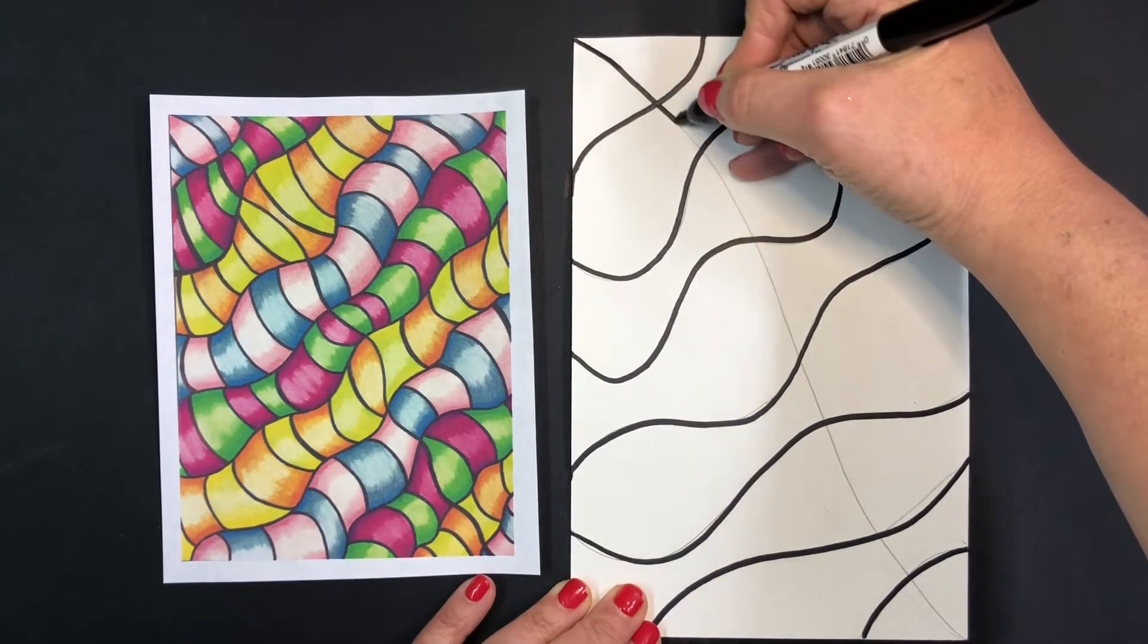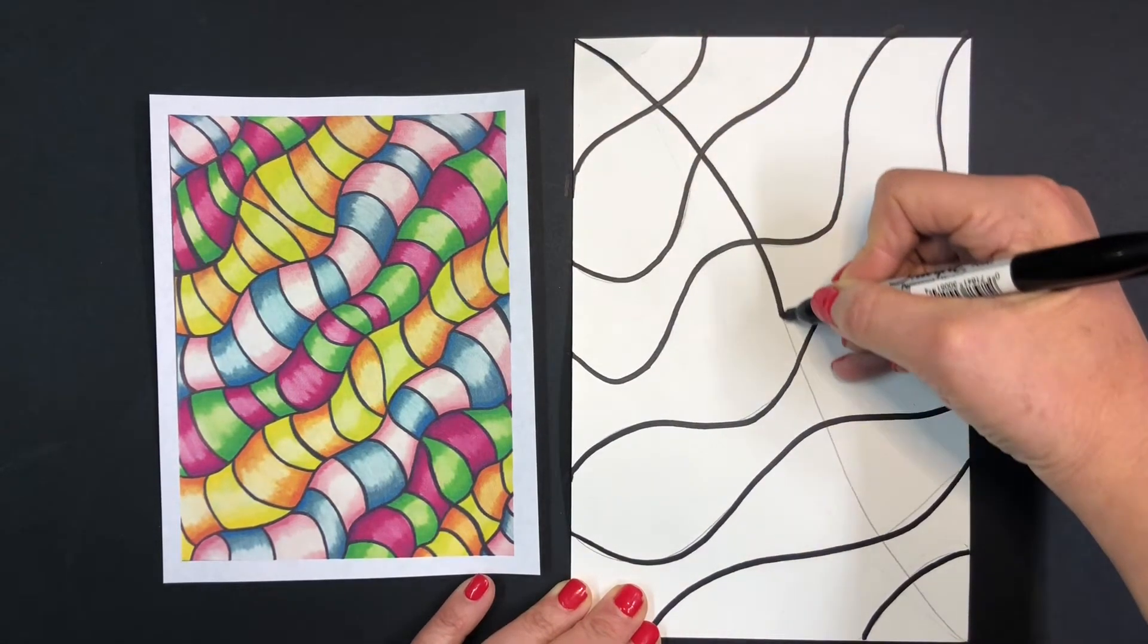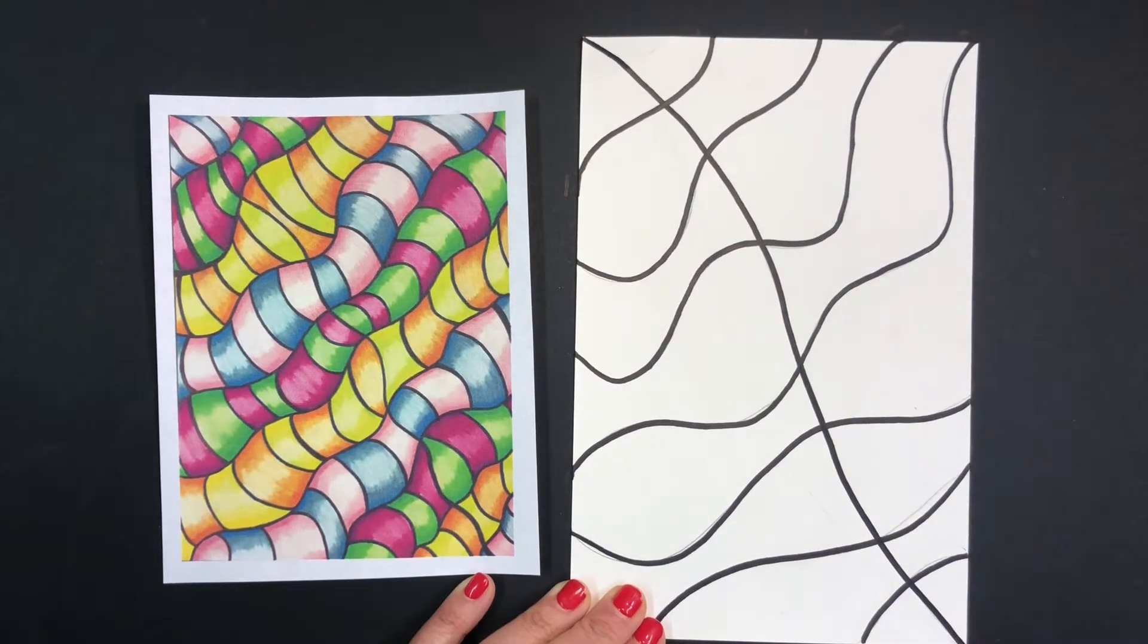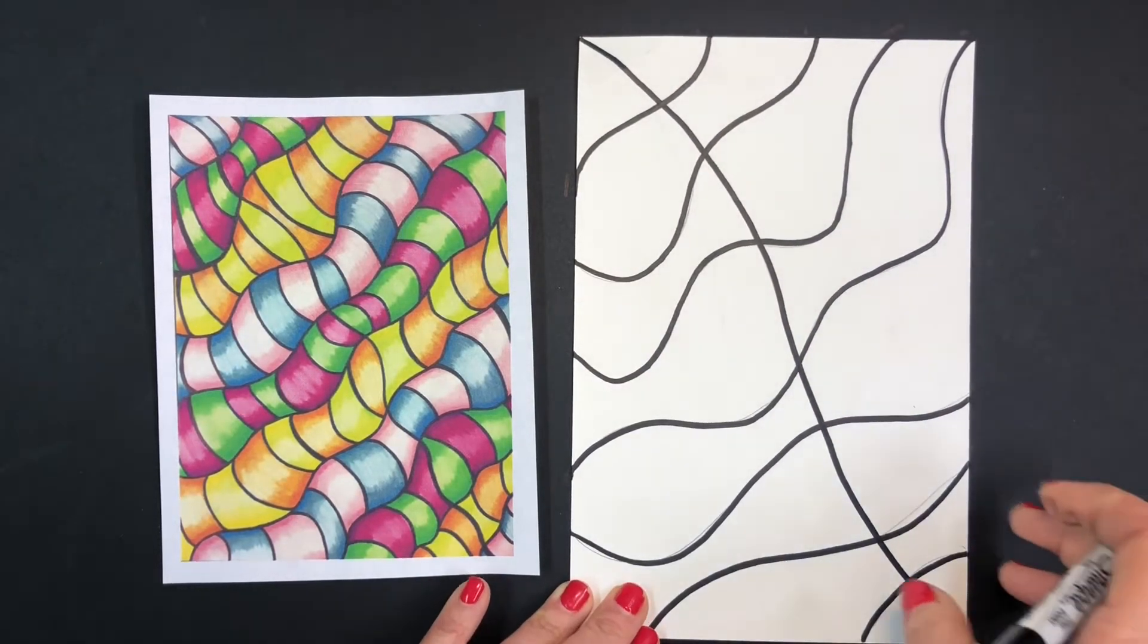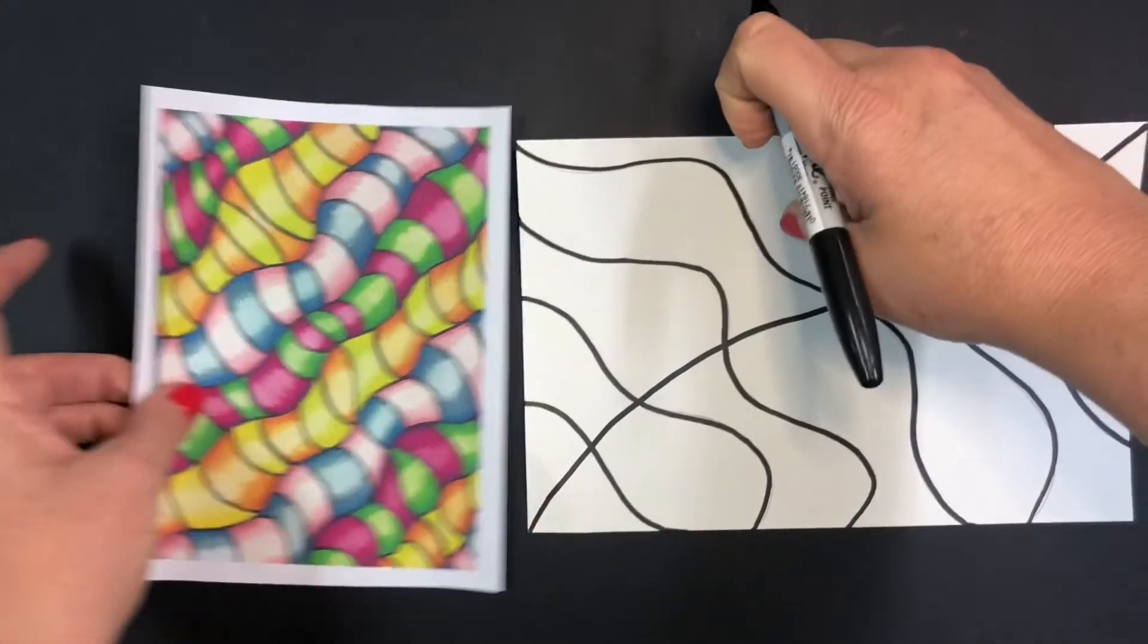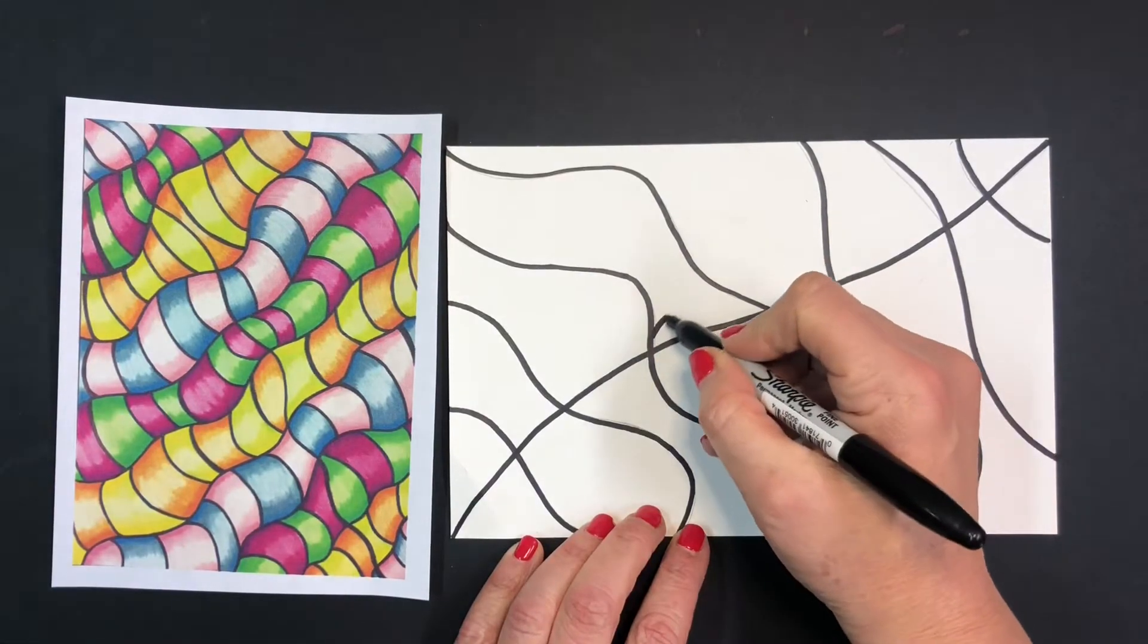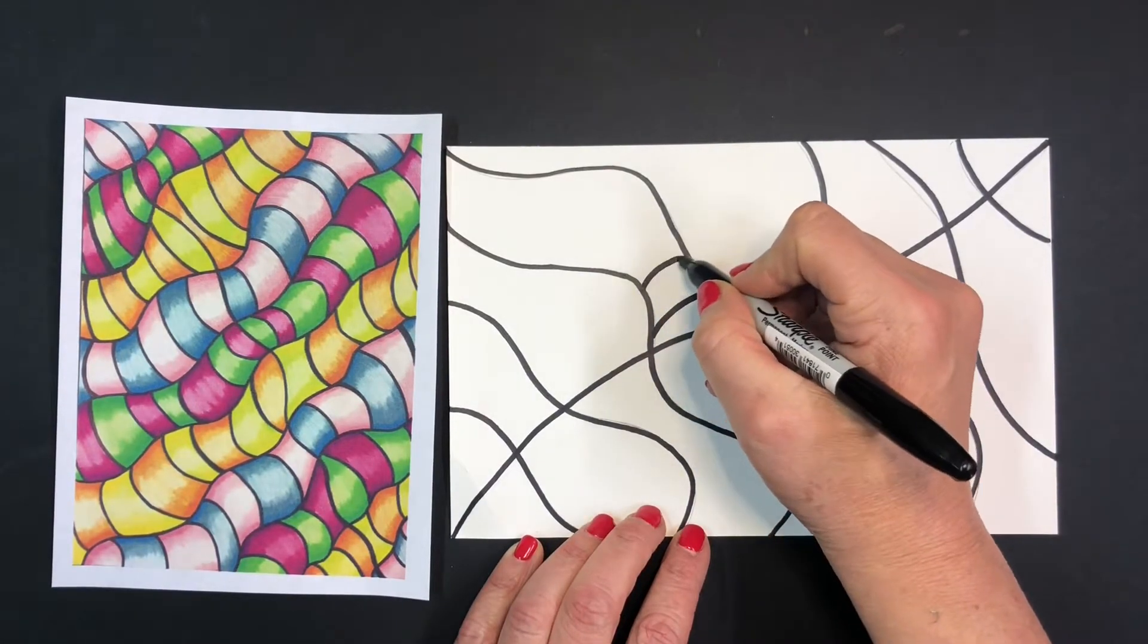And that's going to help you figure out how to draw the rest of your design. So what you're going to do is, the lines that are above the middle line, you're going to curve upward.